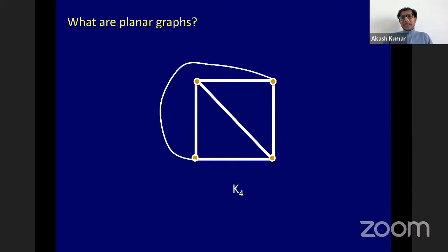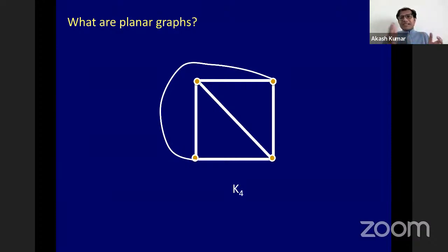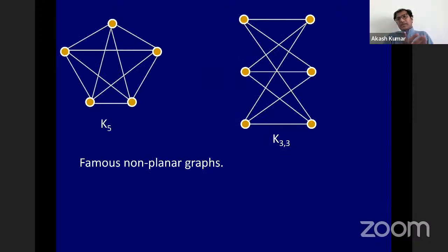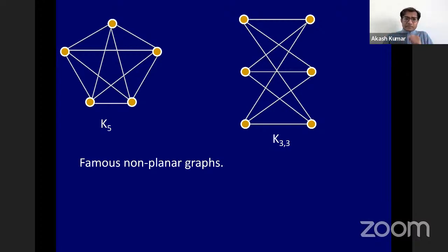Intuitively, if you take a graph on lots of vertices and throw in lots of edges you are persuading edges to hit each other and the graph will be non-planar — that intuition is spot on. You get non-planar graphs that are not very large. For example, the complete graph on five vertices K5 and the complete bipartite graph K_{3,3} with three vertices on each side — both are non-planar.